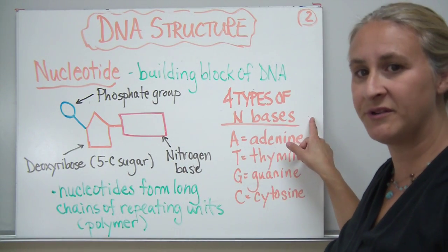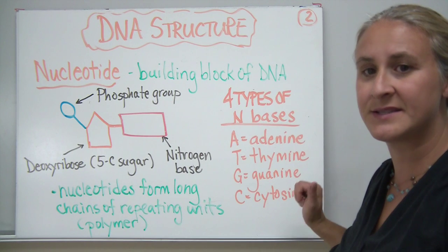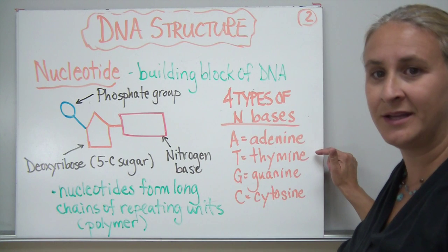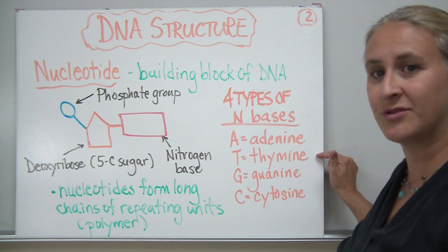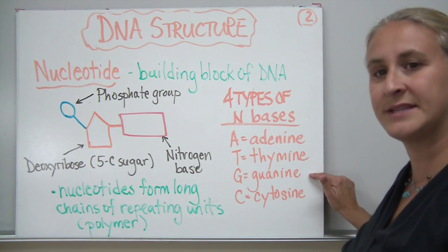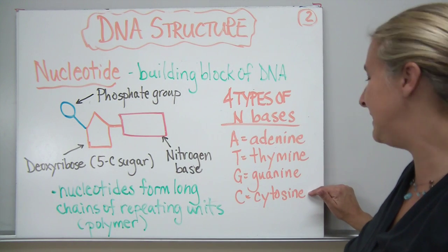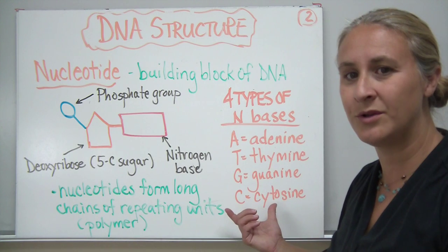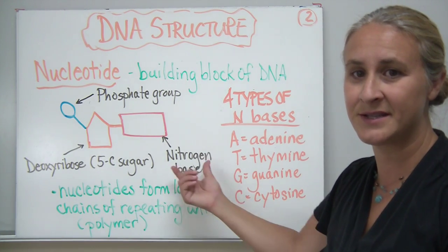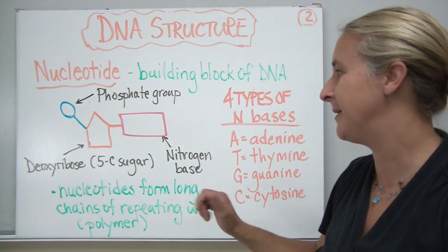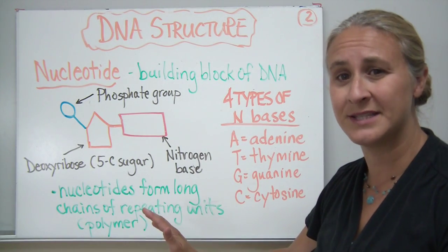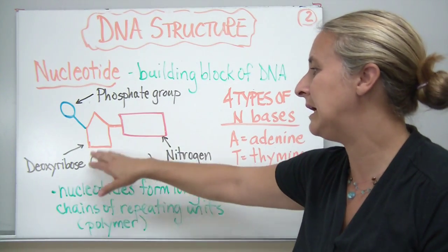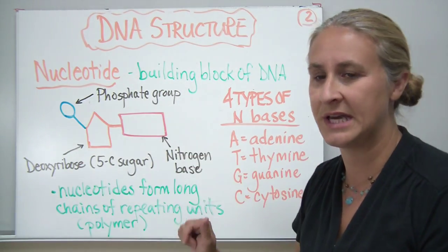There happen to be four different types of nitrogenous bases that DNA uses. The A represents the base called adenine, the T represents the base called thymine, G stands for guanine, and C stands for cytosine. Many times when we talk about DNA we'll only use the first letter of each base when we write it out. Often we'll just use the base and imply that the sugar and the phosphate are attached to it.